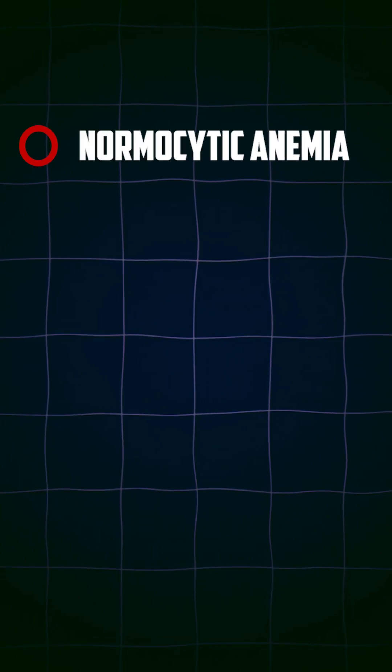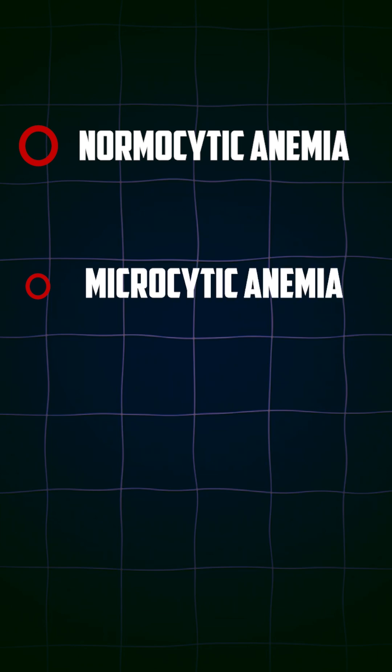The advantage of knowing the size of the RBC, or the MCV, is that it helps us find out the cause of anemia. For example, if the size is normal and the patient is anemic, it is called normocytic anemia. If the size is small, it is called microcytic anemia, and if it is larger, it is called macrocytic anemia.